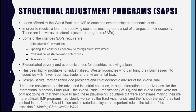This quote is from another piece called Making Globalization Work, where Stiglitz — someone on the front lines of these changes — said: 'I became convinced that the advanced industrial countries, through international organizations like the IMF, the WTO, and the World Bank, were not only not doing all that they could to help these developing countries, but were sometimes making their life more difficult. IMF programs had clearly worsened the East Asian crisis, and the shock therapy they pushed in the former Soviet Union played an important role in the failure of that transition.' Stiglitz saw that these programs were making things worse, and he wondered whether that was actually the intended outcome — because it was more profitable for industrialized Western countries.